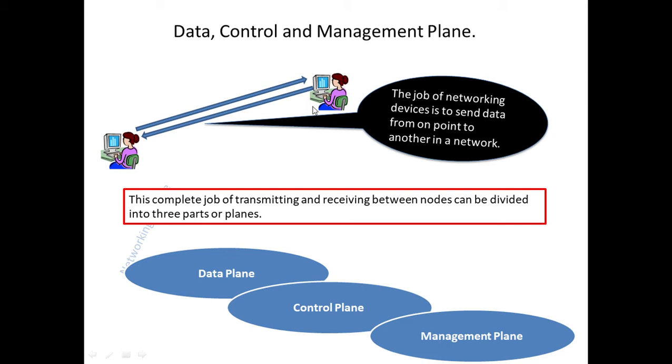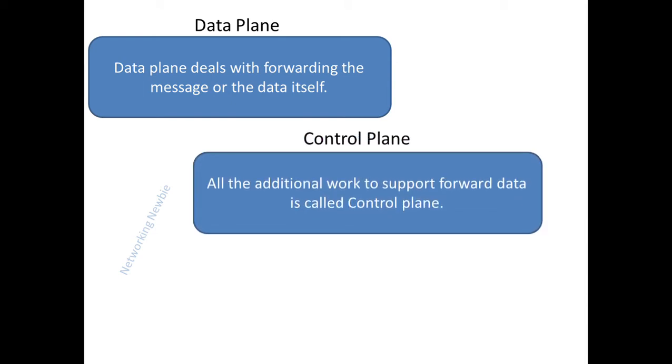All three planes help accomplish the job of transmitting and receiving data between two endpoints. The data plane's job is to forward the actual message or data itself — for example, video or audio. The control plane provides additional support needed to send that data, such as establishing a routing table in the router.